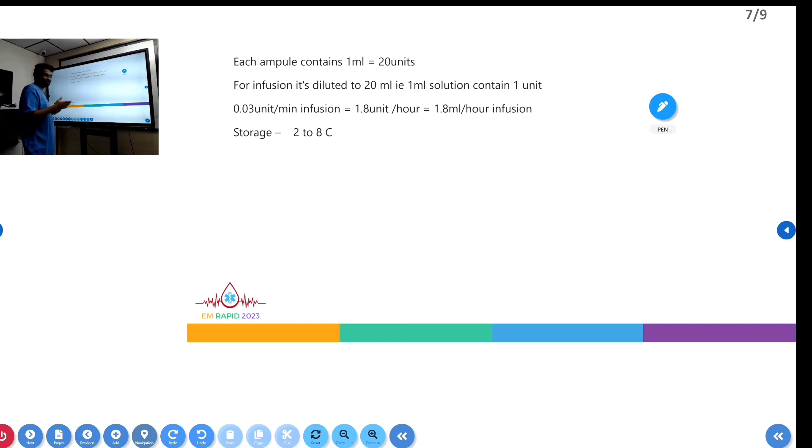It is given as 0.03 units per minute infusion, or 1.8 units per hour, or 1.8ml per hour infusion. The storage temperature is 2 to 8 degrees Celsius, outside the freezer.